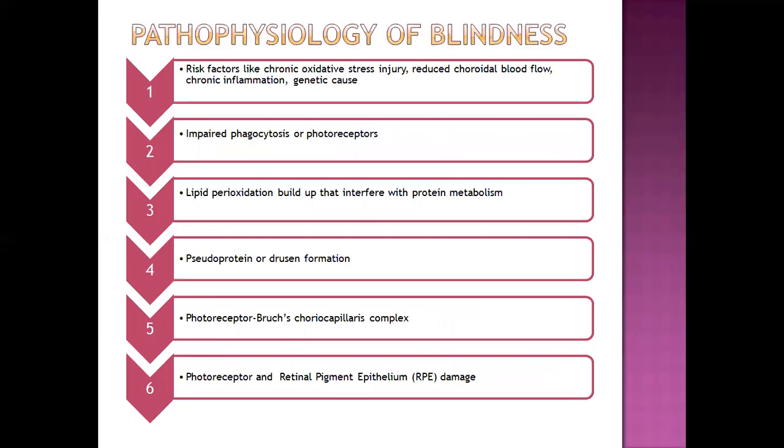The pathophysiology of blindness begins with risk factors such as reduced blood flow, chronic inflammation, and genetic causes, which progress toward impaired fibrocytosis. This leads to lipid peroxidation buildup that disturbs protein metabolism of the body, resulting in formation of pseudoprotein — protein-like substance also called drusen. Subsequently, photoreceptor blocks and choriocarillaries complex form, causing retinal pigment epithelium damage and photoreceptor damage, ultimately leading to blindness.